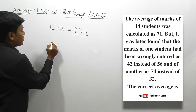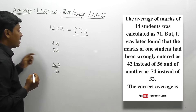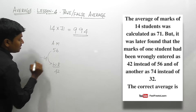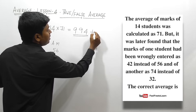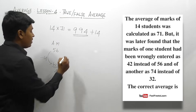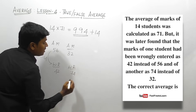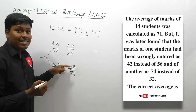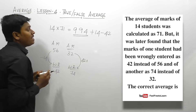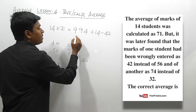For the first student: actual mark is 56 but wrong reading is 42 — that is 14 marks less, so we add 14. For the second student: actual mark is 32 but wrong reading is 74 — that is 42 marks more, so we subtract 42. The correct total is (994 + 14 − 42) ÷ 14.